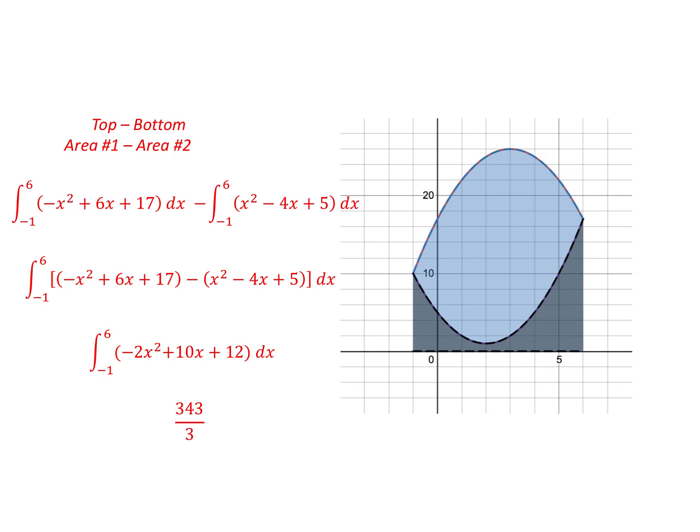Now I'm not going to go through all the steps of integration. You pretty much know how to do those steps. Minus 2x squared becomes minus 2x cubed over 3, plus 10x squared over 2, plus 12x. And then we plug in 6, we plug in minus 1, we subtract those two, and we come out with our area of 343 thirds. And you can leave that as an improper fraction.